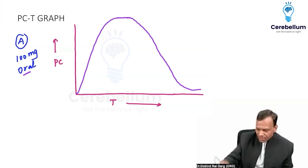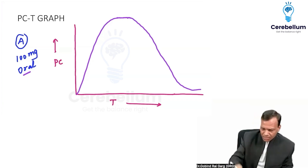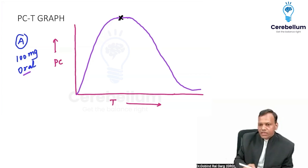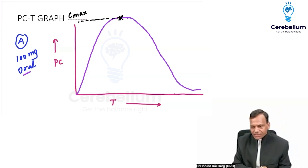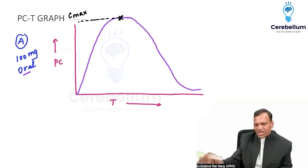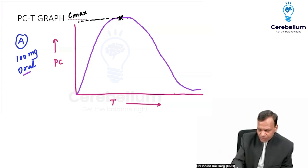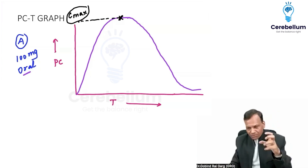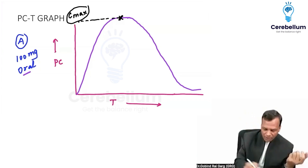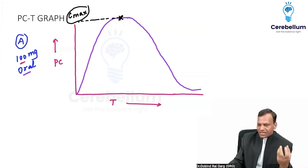From this graph, we can obtain three important parameters. The first is the highest point on the graph. If we extrapolate it on the y-axis, this is known as Cmax. Cmax is the maximum concentration that we can obtain by giving that dose — 100 mg dene pe jitni bhi maximum concentration, that is called Cmax.